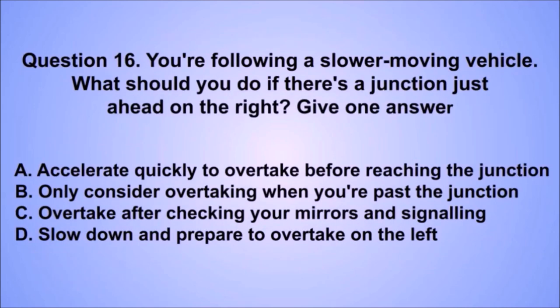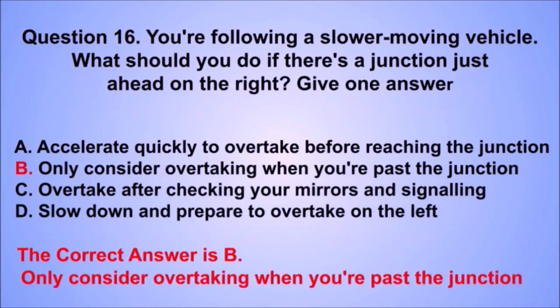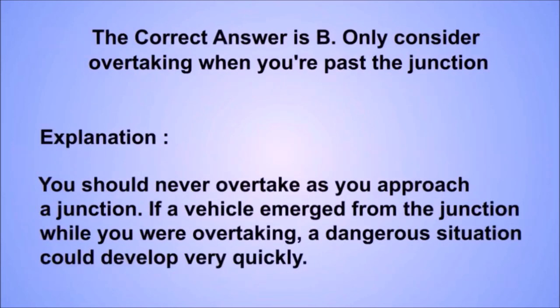Question 16. You're following a slower moving vehicle. What should you do if there's a junction just ahead on the right? The correct answer is B: Only consider overtaking when you're past the junction. You should never overtake as you approach a junction. If a vehicle emerged from the junction while you were overtaking, a dangerous situation could develop very quickly.